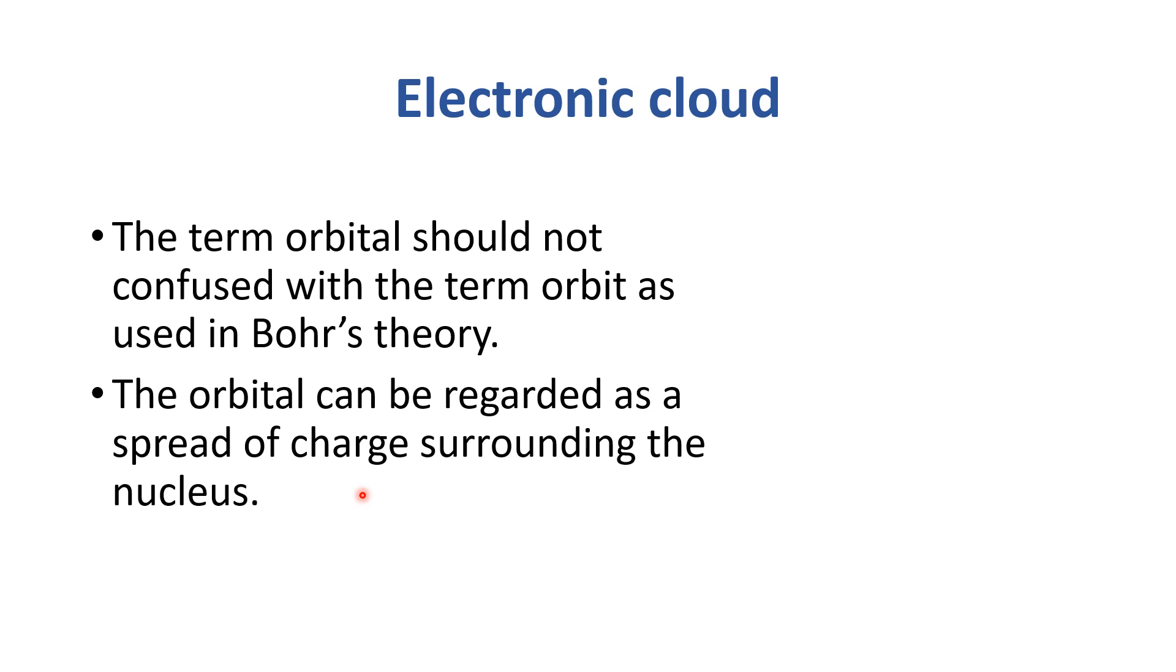Orbit and orbital are two different terms. Orbit ki term Bohr introduced karwai thi. He said that orbits are the pathway around the nucleus jis mein electron revolve karte hain. While orbital is a spread of charge surrounding the nucleus. Ye koi ek particular path nahi hota.